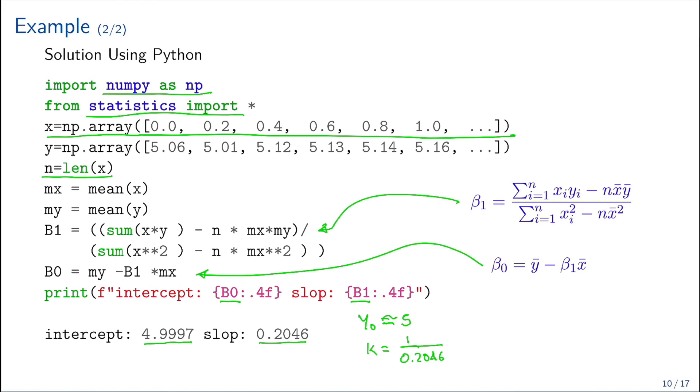We have that the length y equals beta0 plus beta1 multiplied by x. By replacing x with 1.3,